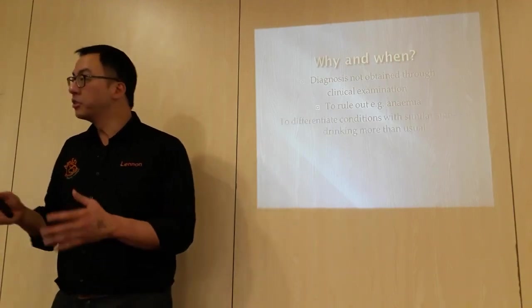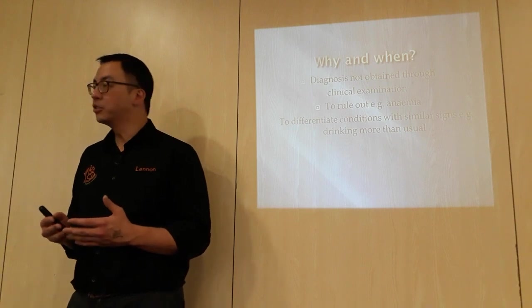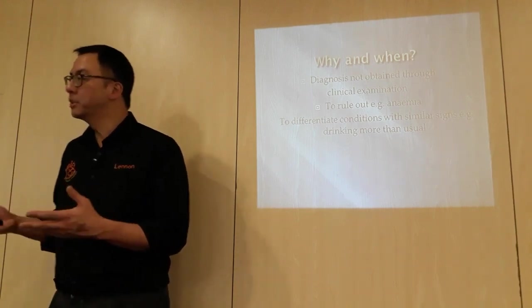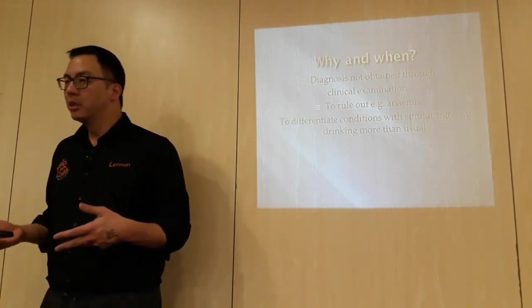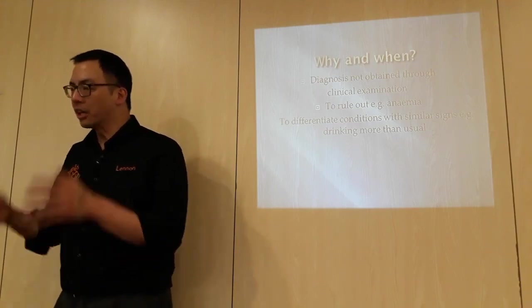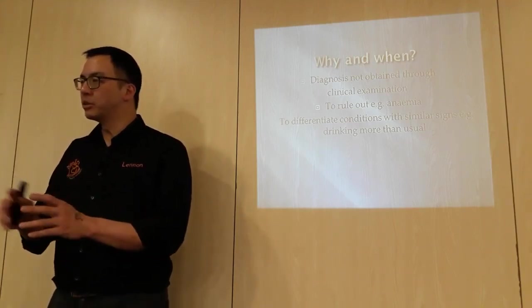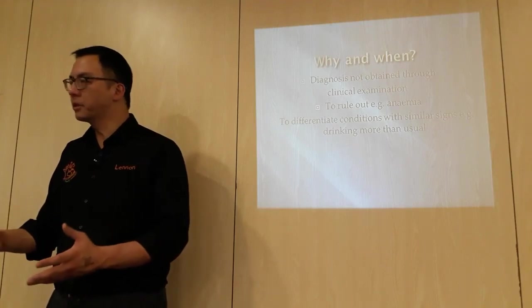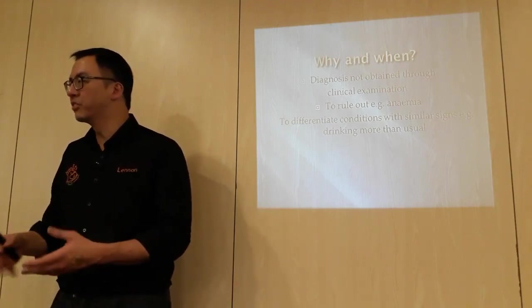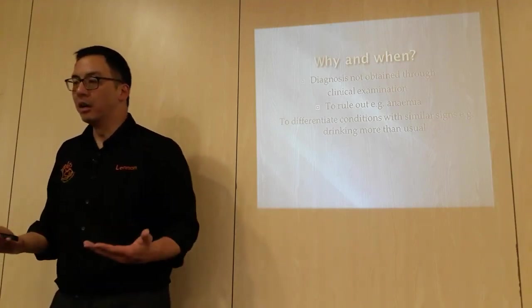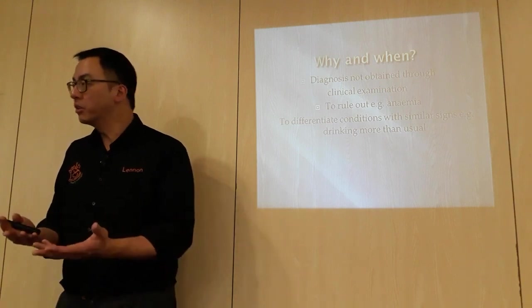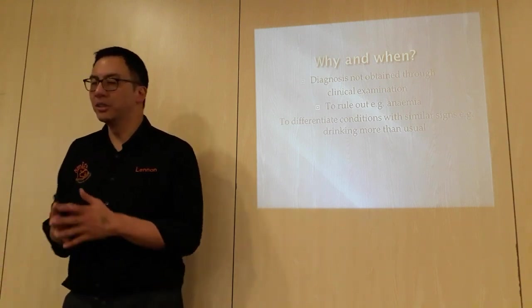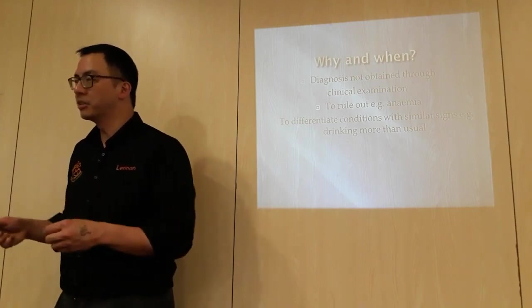To differentiate conditions with similar signs. A dog comes in that is looking unwell, a cat comes in that is really unwell. There are a lot of different reasons that cause the same clinical signs, which you sometimes cannot see on clinical examination because you simply can't differentiate between, say, kidney disease or Cushing's, just by looking at an animal. So the blood test will differentiate similar clinical signs.